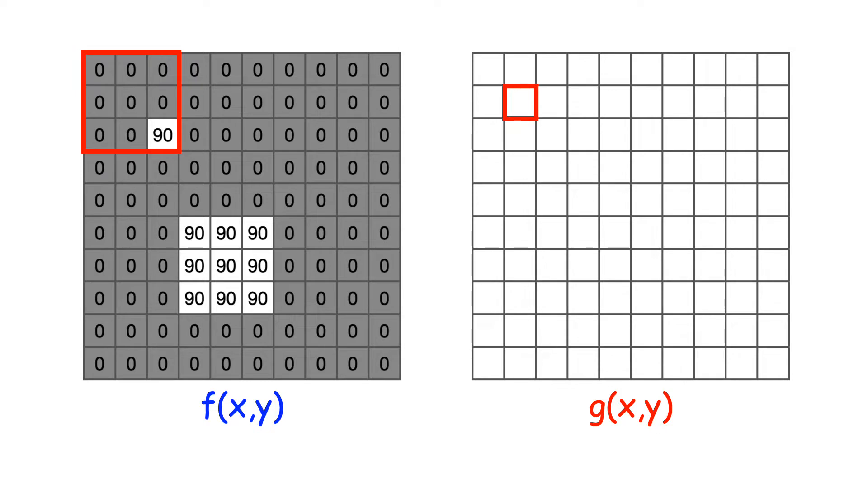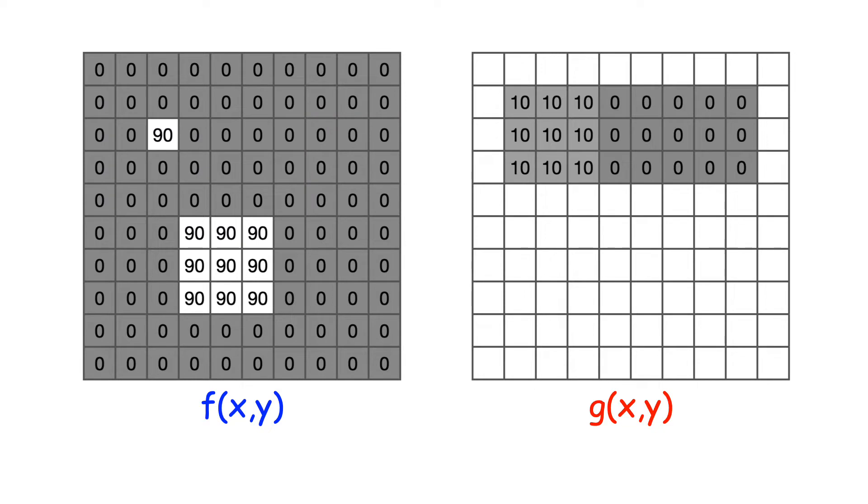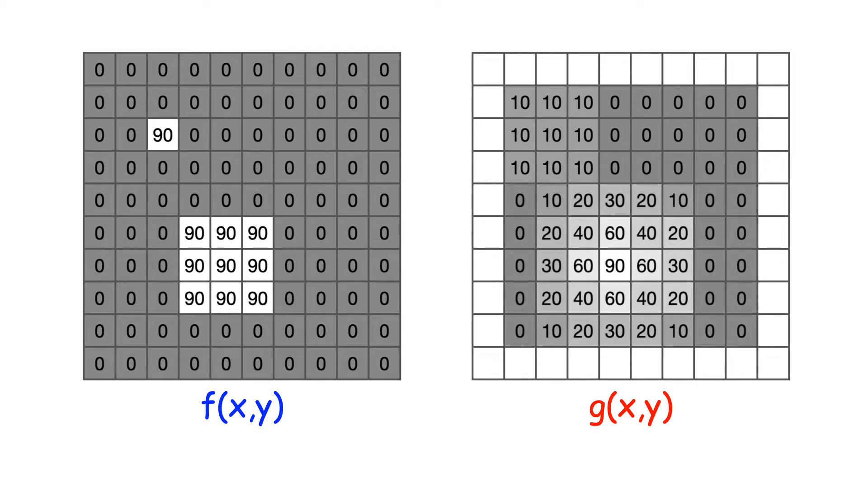The mean of these nine values is 10, and we'll keep getting 10 as long as there is only one light dot in the window. And it continues for the next row. Here you see that the light dot on the left turned into a dim square of 10s on the right after filtering. And the little square on the left gets blurred.